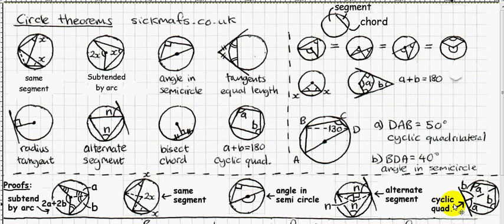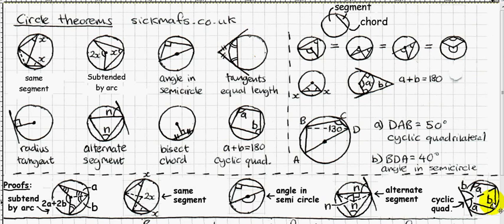Finally, using the alternate segment theorem, we prove that opposite angles in a cyclic quadrilateral add to 180 degrees. Draw a tangent — a straight line — so angles A and B on it add to 180. By the alternate segment theorem, the angle in one segment equals A, and the angle in the other equals B. Since A plus B equals 180, the opposite angles of the cyclic quadrilateral add to 180. Proved.